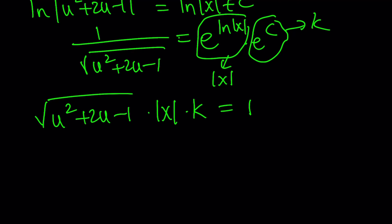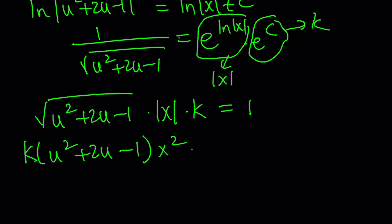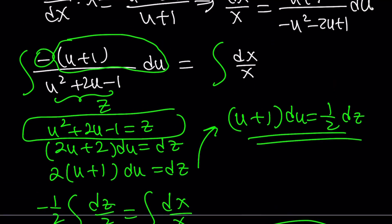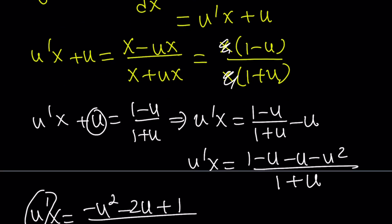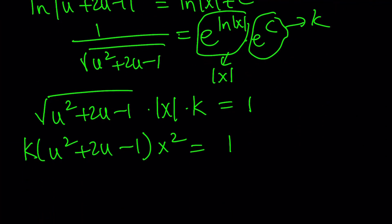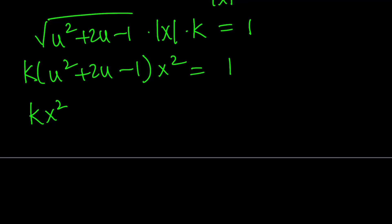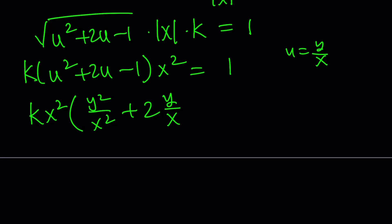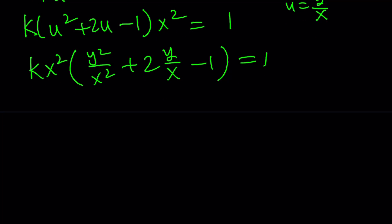Now I'd like to back-substitute. What is u equal to? Well, since y equals ux, we have u equals y/x. So we replace u with y/x: (y²/x² plus 2y/x minus 1) times x² equals a constant. Distributing x² gives: y² plus 2xy minus x² equals a constant. Dividing both sides by k gives another constant m, so we have: k times (y² plus 2xy minus x²) equals 1.